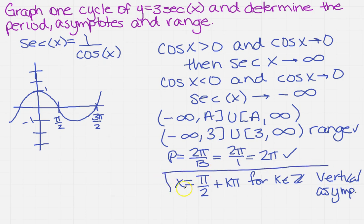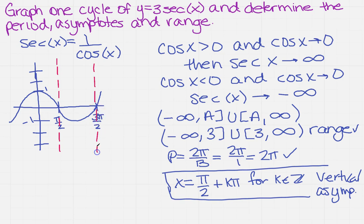So how does that play into what I'm going to do? It says the asymptotes are at pi over 2 plus k pi. So pi over 2 plus 0 would be pi over 2 — when I draw it, I'm going to have a dashed vertical line at pi over 2. And if k is 1, it's going to be 3 pi over 2, so I'm going to have another dashed line there. When the cosine is greater than 0 and going towards 0, the secant goes towards infinity. When it's negative, it goes towards negative infinity on the other side.